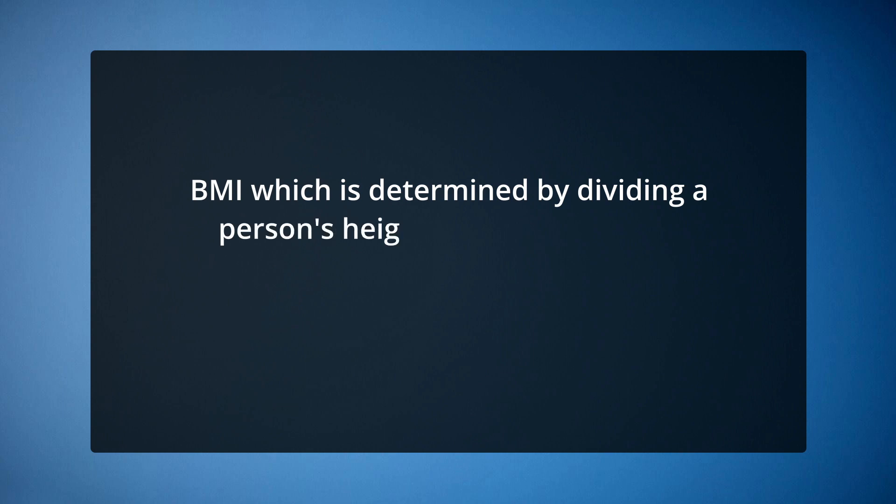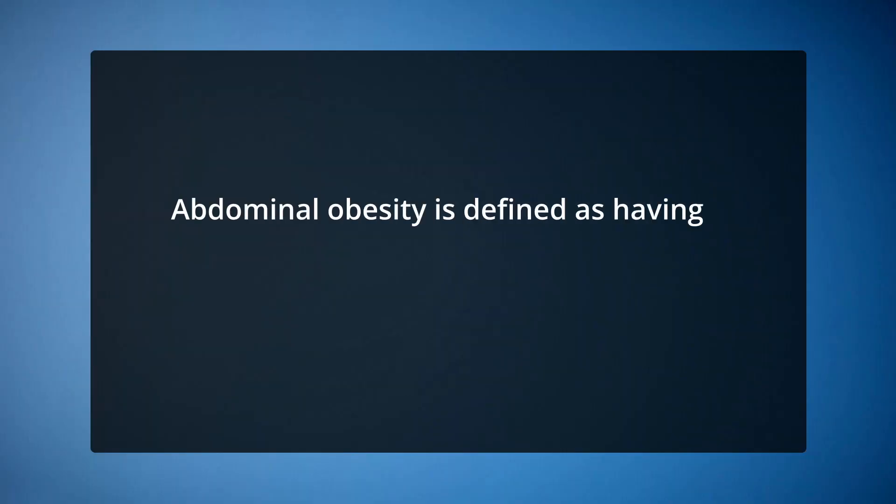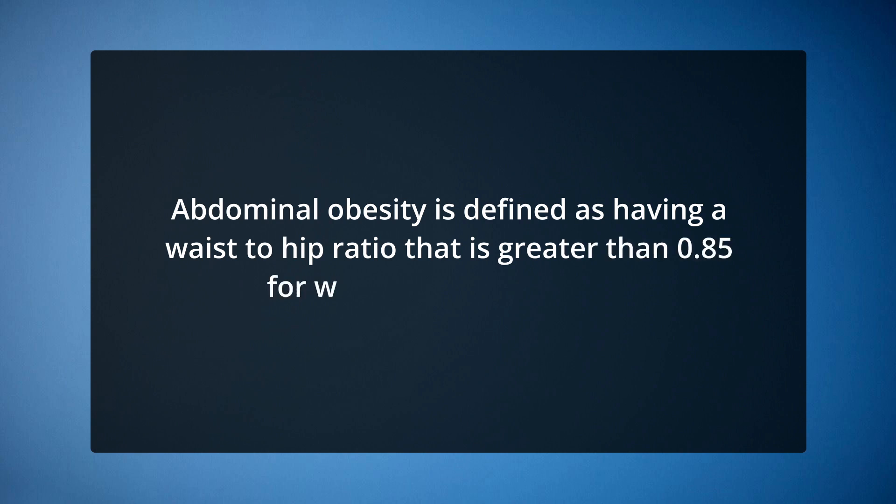Body mass index is determined by dividing a person's body weight in kilograms by their height in meters squared. Overweight is classified as a BMI of 25 to 29.9 and obesity as a BMI of 30 or above, according to the National Task Force on the Prevention and Treatment of Obesity. The waist circumference and waist-hip ratio approach evaluates fat distribution. Abdominal obesity is defined as a waist-to-hip ratio greater than 0.85 for women and 0.9 for men.